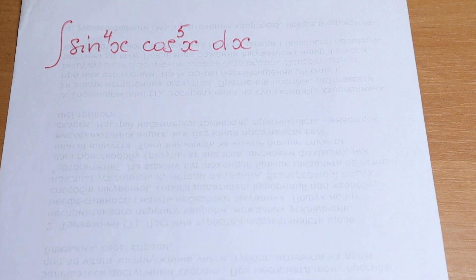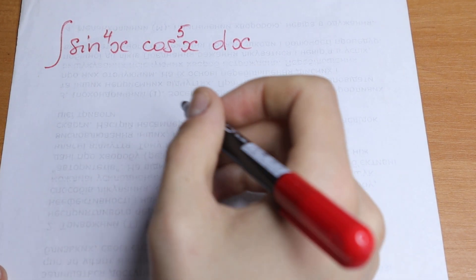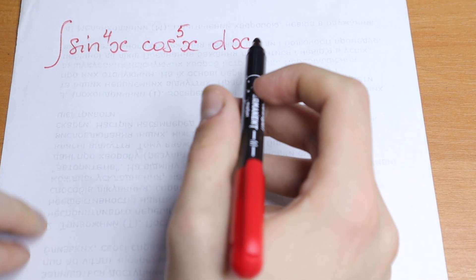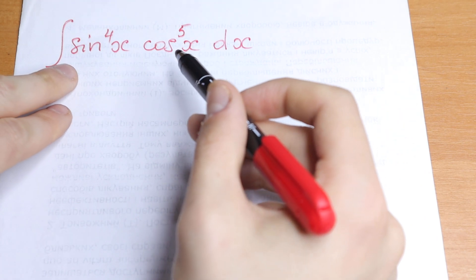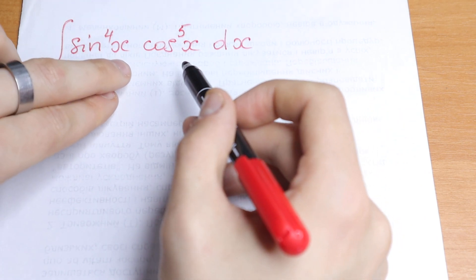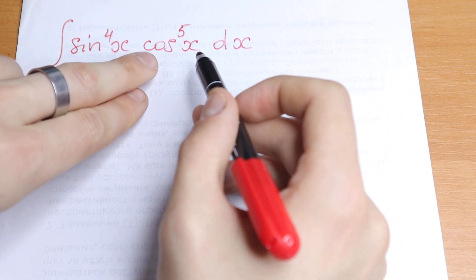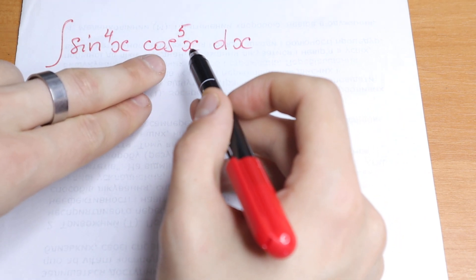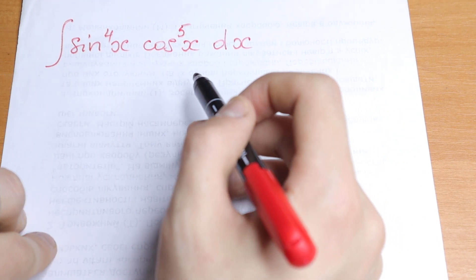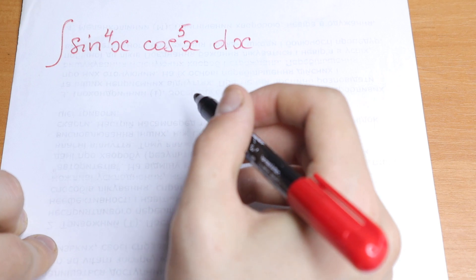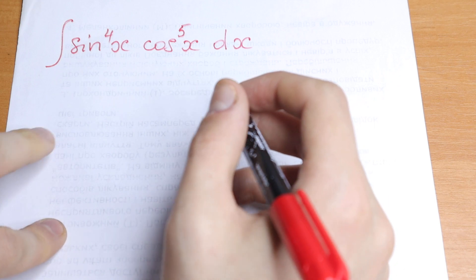Hello everyone! Welcome back to High Mathematics! Today we have an interesting integral. We have sine to the fourth power x times cosine to the fifth power x dx. How can you solve this integral?